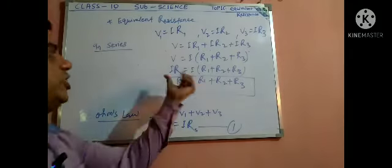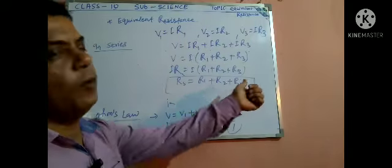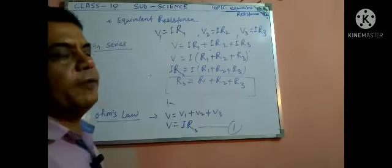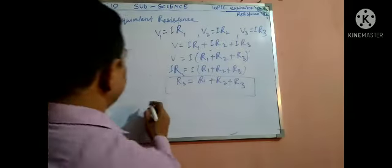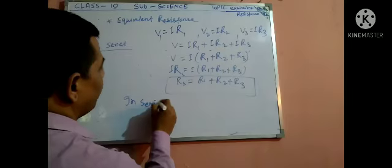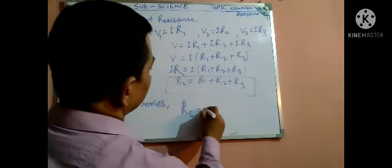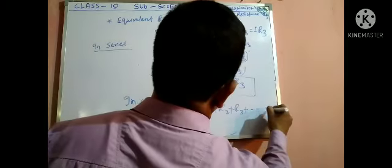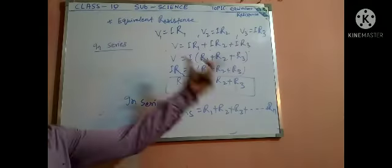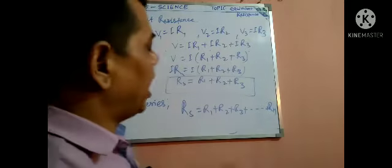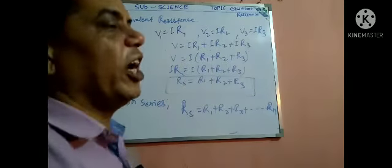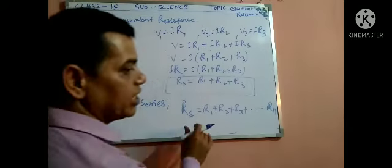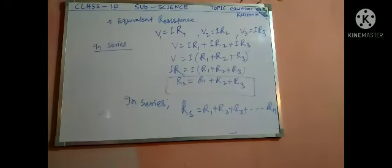So in series, all resistance Rn — sum of R1, R2, R3 — for many resistances R1, R2, R3, R4, R5 up to Rn, the formula in series is: RS = R1 + R2 + R3 + ... + Rn. When a larger number of resistances are combined together, that is the RS term — all R combined together, that is R in series. Now taking the case of parallel.